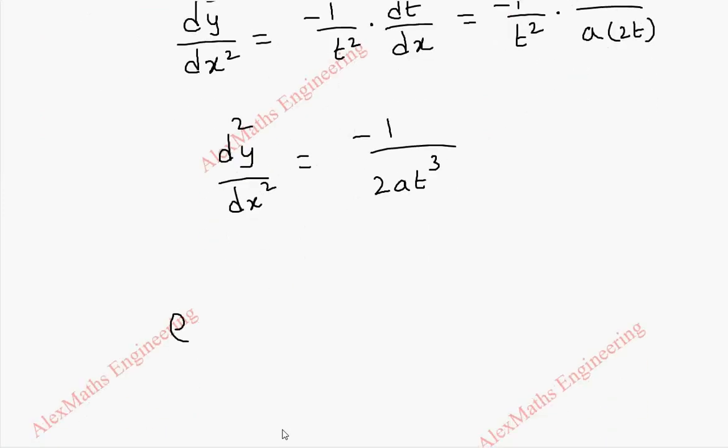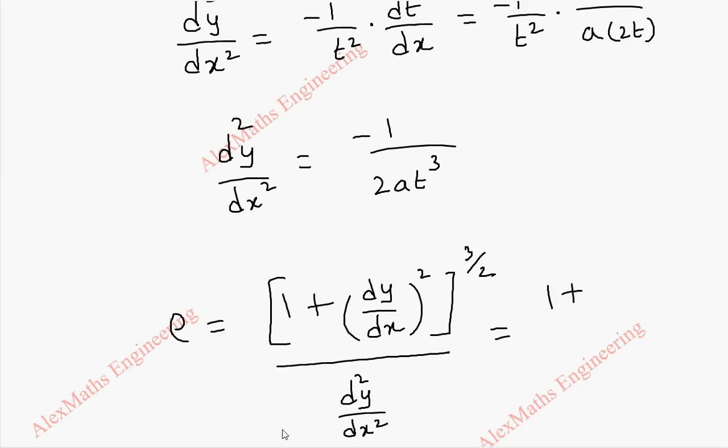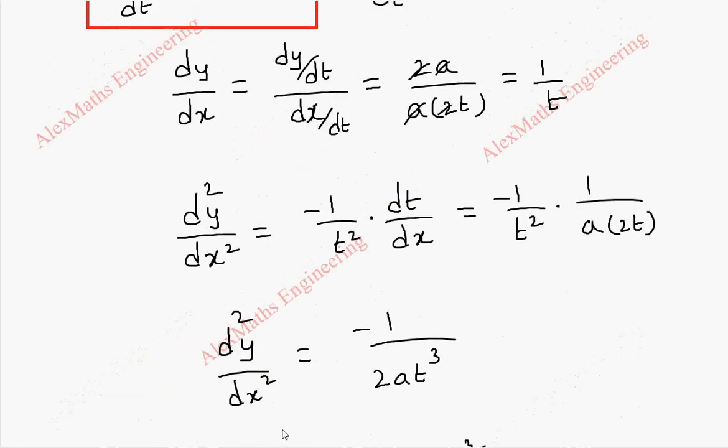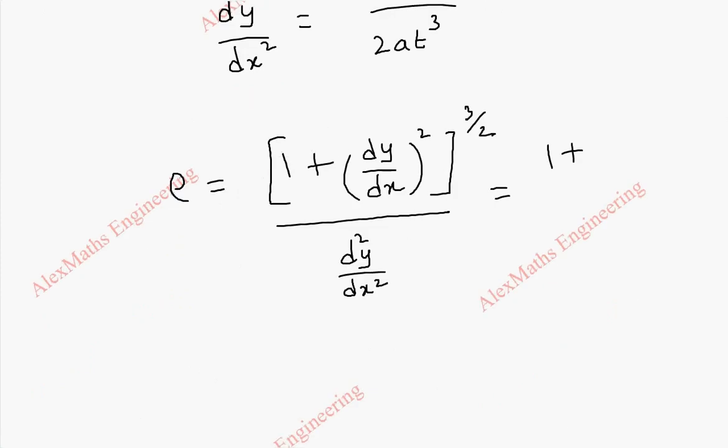Now, the radius of curvature, ρ is [1 + (dy/dx)²]^(3/2) divided by d²y/dx². So this is 1 plus 1/t² whole square. Then for this, we have power 3/2. And this is minus 1/(2at³).